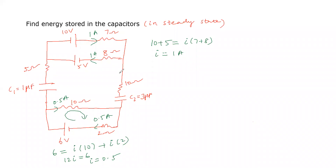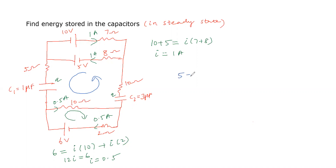Now for the third loop, we assume charge Q on both capacitors — whatever charge enters one capacitor also enters the other. Considering this loop with an EMF of 5 volts, we apply the loop rule: 5 volts equals sum of potential differences.